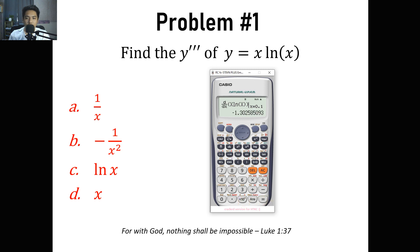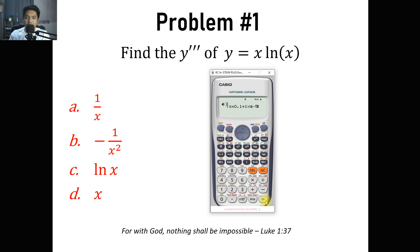We get negative 1.3025 and so on, and store it in variable A — Shift Store A. Then going back using the replay button, we add 1 times 10 raised to negative 5 to x, as if adding a very small number. We get the derivative again and Shift Store it to B — that would be our f prime of x sub 2.